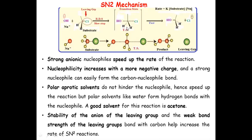This transition state is a very high energy state — it is unstable and immediately falls down into a product where the hydroxyl group is attached to the carbon and the leaving group has departed. If you observe the orientation of the leaving group and the nucleophile, they are exactly on opposite sides, and therefore we say that this reaction takes place with inversion of configuration.